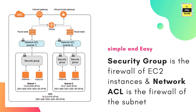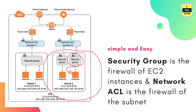The security group and network ACL are both firewalls — one for the subnet and one for the instance. Network Access Control List is for the subnet, which means if you have any rules enabled or denied on the network ACL, it is applicable for all instances running in that subnet. But rules on security groups are applicable only for the assigned instance.